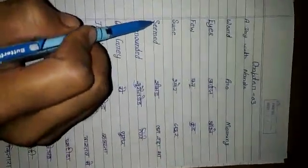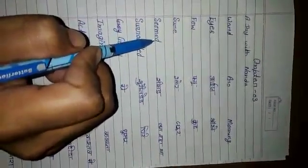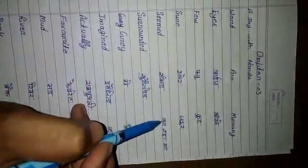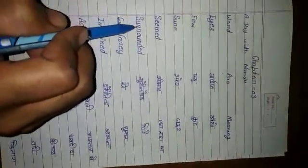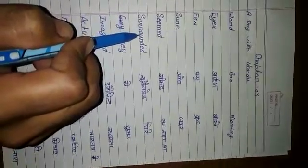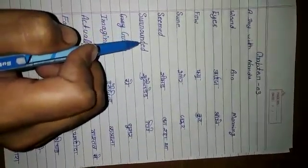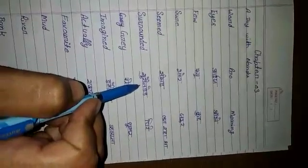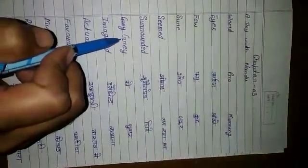S, E, M, E, D — Seemed. Seemed means Lag Raha Tha. S, U, R, O, U, N, D, E, D — Surrounded. Surrounded means Ghire.